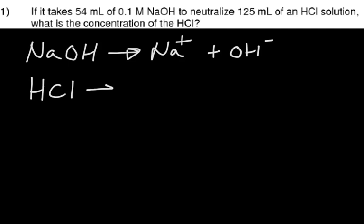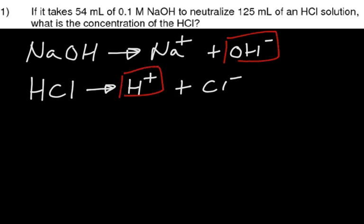When the acid ionizes, we get H+ and we get Cl-.